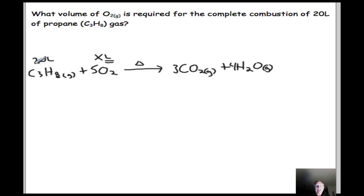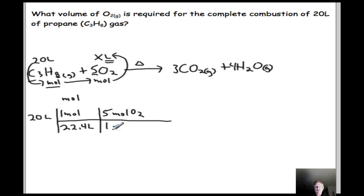We're given a starting volume of 20 liters of propane. Our pathway will be to turn liters of propane into moles, moles of propane into moles of oxygen, and then finally moles of oxygen into liters of oxygen. We'll start off with our 20 liters of the C3H8, and we'll begin by converting that to moles of the C3H8 by taking our conversion factor of one mole over 22.4 liters. That puts us at solving for moles of the propane.